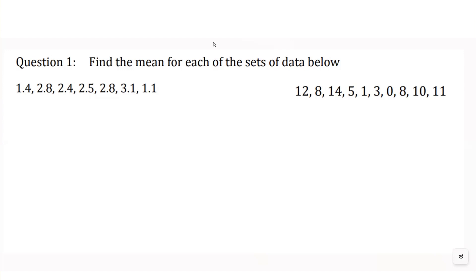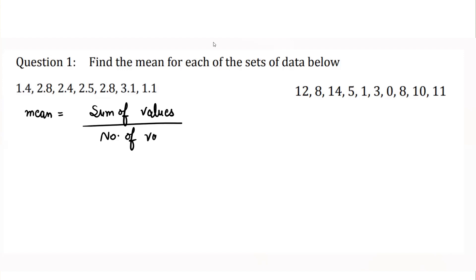In this question, we have to find out what is the value for the mean. To calculate the mean, we use the formula: mean equals sum of values divided by number of values. We count how many total values are given in the data: 1, 2, 3, 4, 5, 6, and 7. So n equals 7.